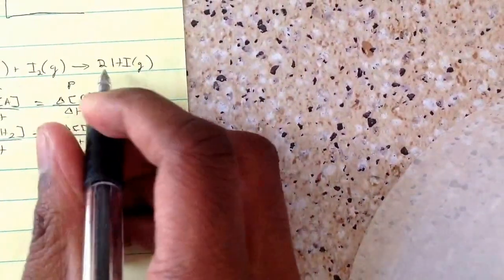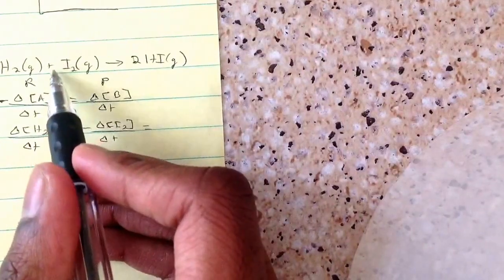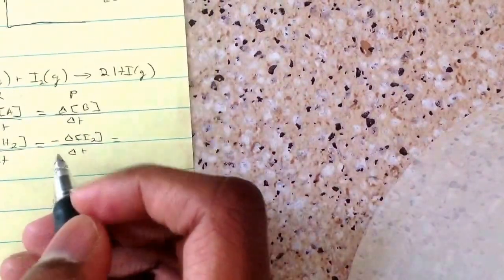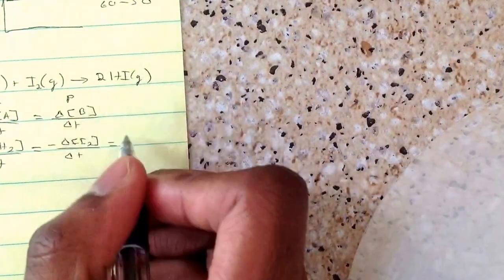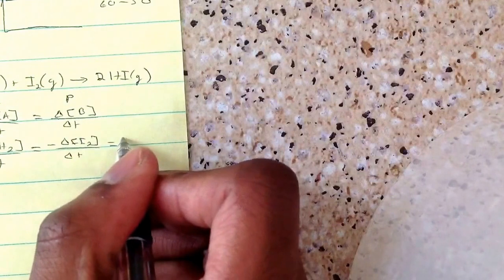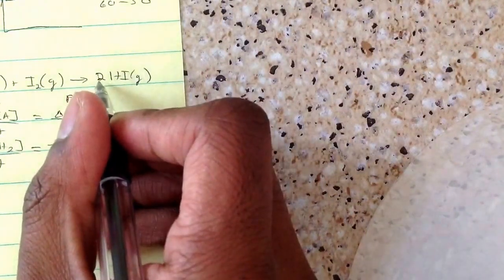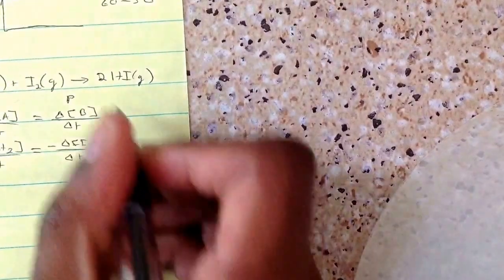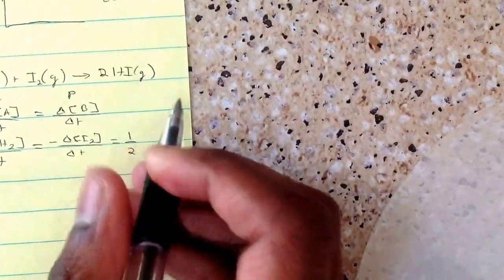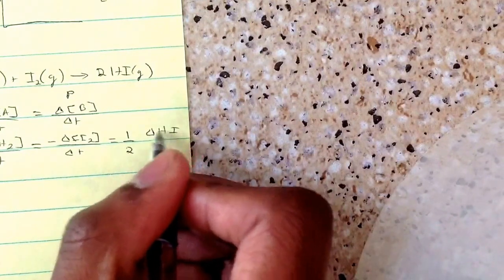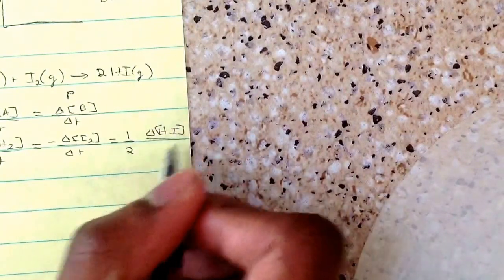Finally, it's going to equal this one, and the coefficient is 1, so it would just be 1 over 1, and so we don't put that there. And then the product is going to be positive, and we look at the coefficient, and it's 2, so the formula is 1 over 2. You put this coefficient over 1, and then finally, change of HI over change of t.